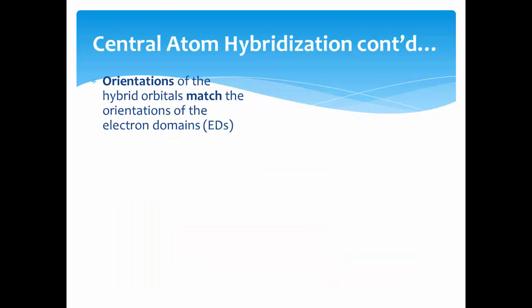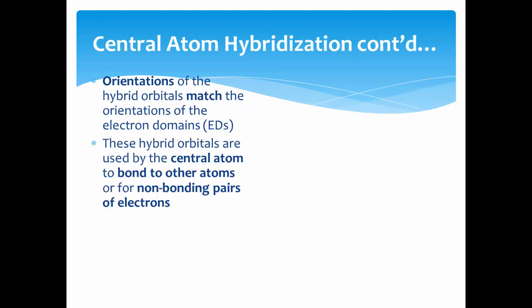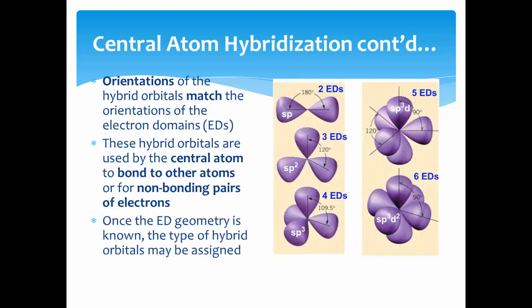Orientations of the hybrid orbitals match the orientations of the electron domains. These hybrid orbitals are used by the central atom to bond to other atoms or for non-bonding pairs of electrons. So, once the electron domain geometry is known, the type of hybrid orbitals may be assigned.